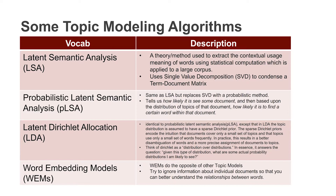Word Embedding Models, or WEMs, are kind of lumped in with topic models, but they do the opposite. They actually try to ignore information about the documents and focus more on relationships between the words themselves — looking at word usage and what words tend to appear around each other, then finding other words used in a similar manner.